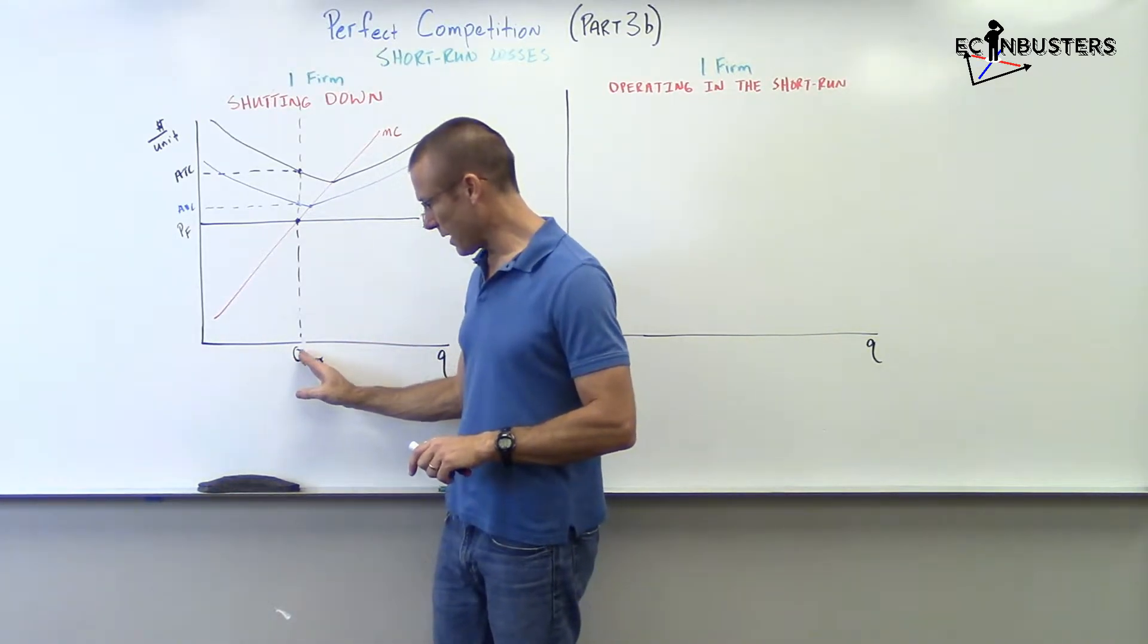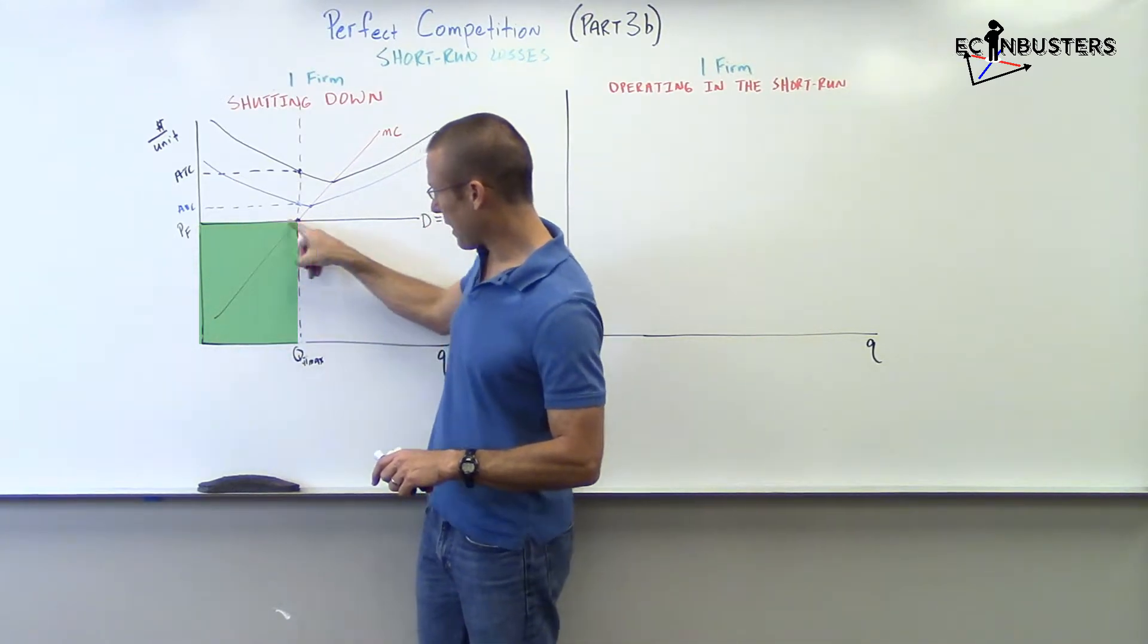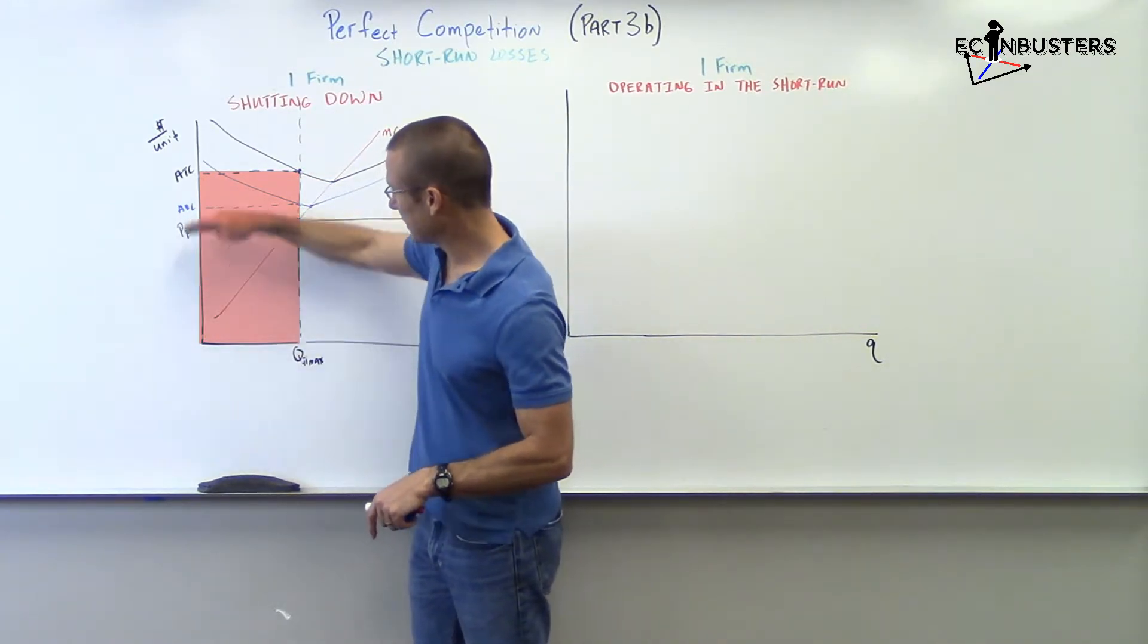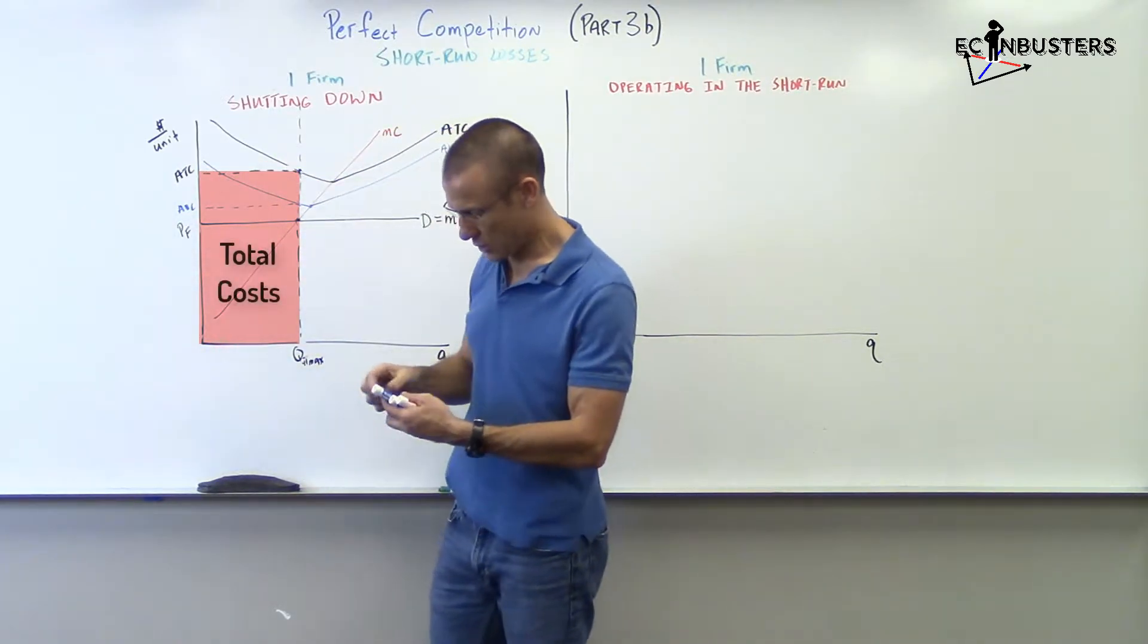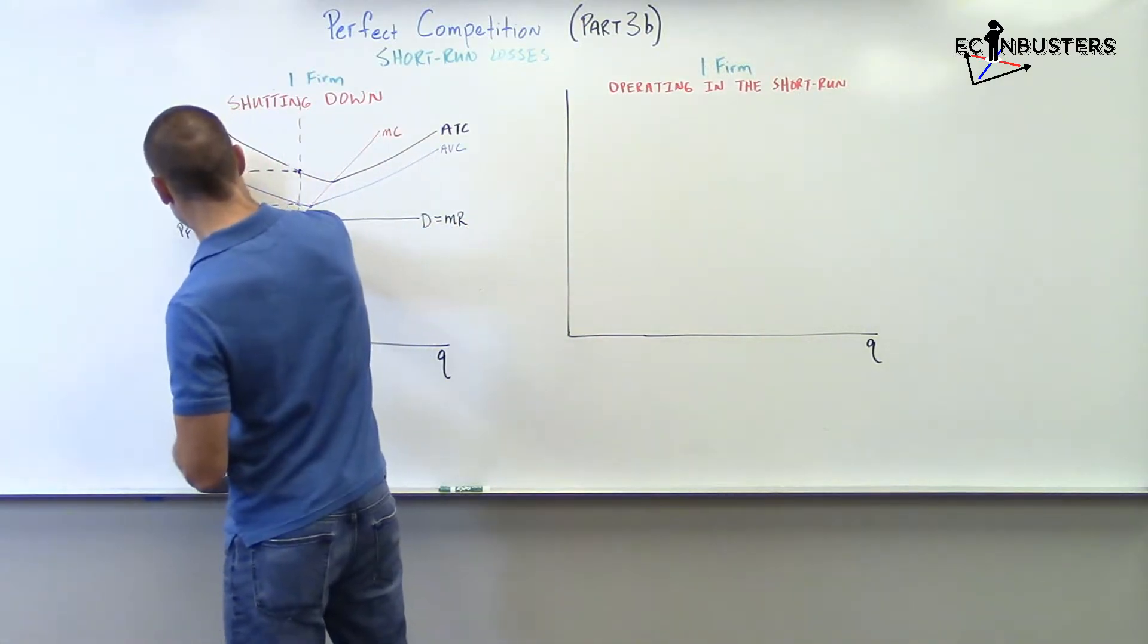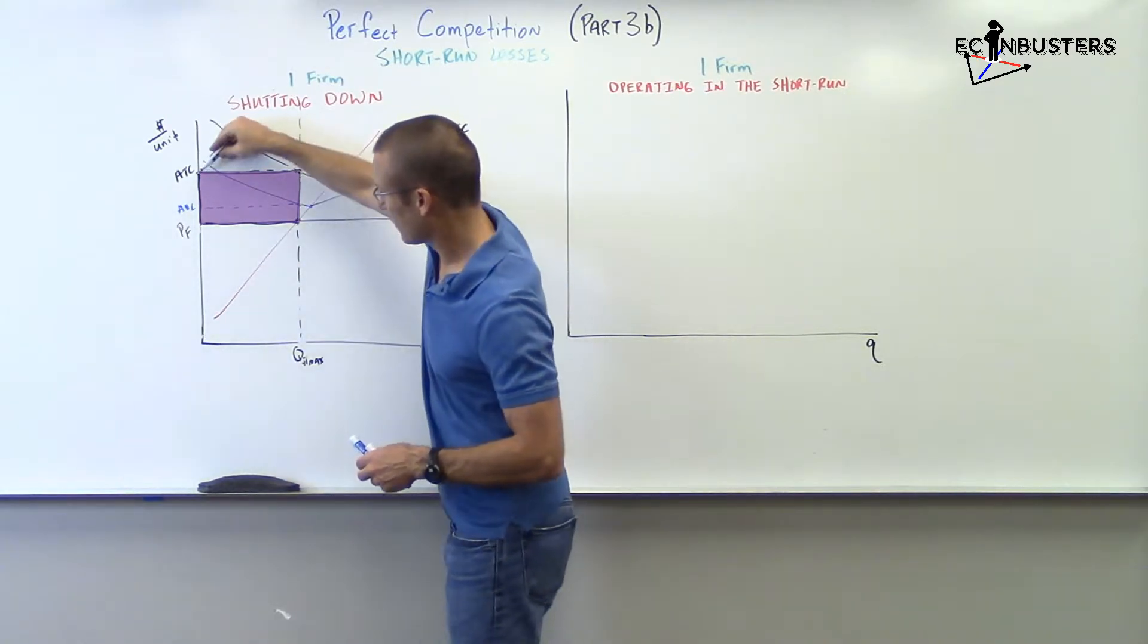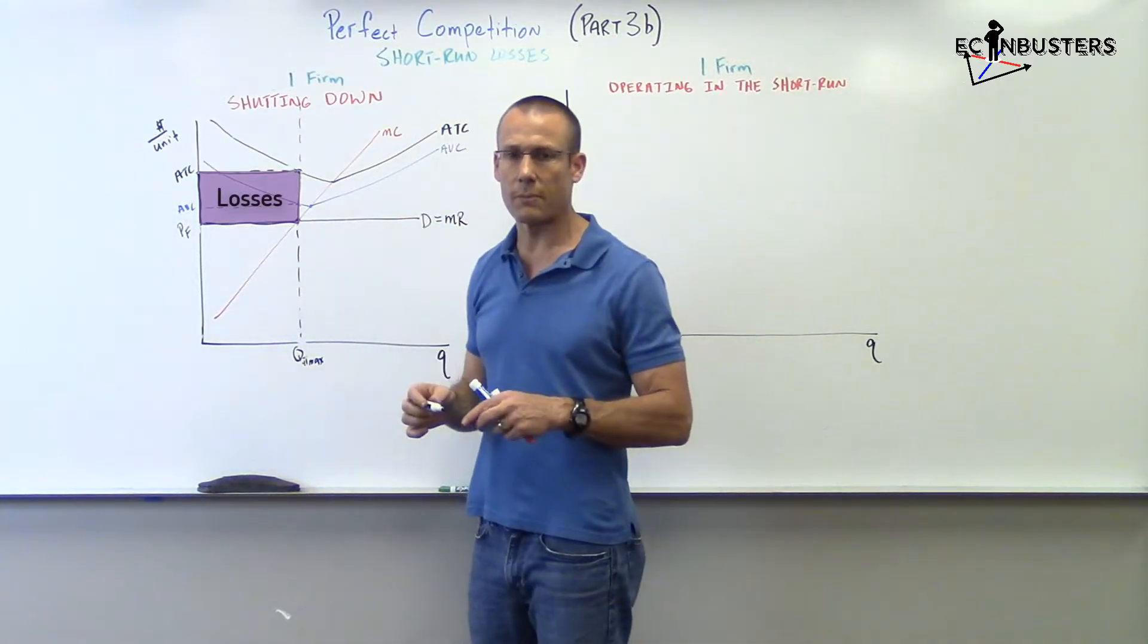Price times quantity. That box right there, total revenue. ATC times quantity. ATC times the quantity. That box, total cost. So, our losses, if we operate, are going to be, try to not step in front of you, they're going to be that big rectangle. From ATC, the price over the quantity. Those will be our losses if we operate.